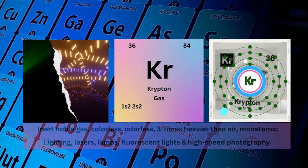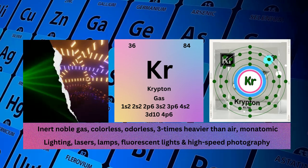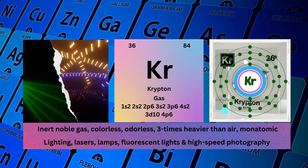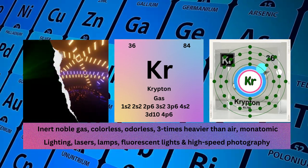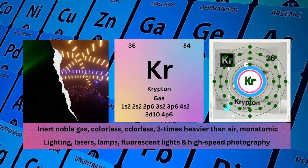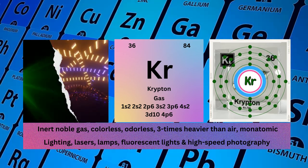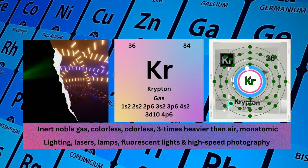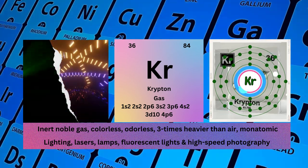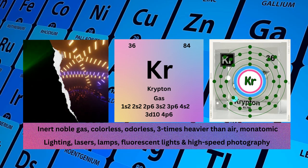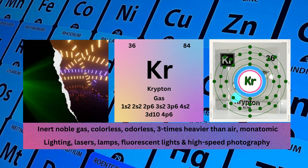Krypton. Atomic number 36. Mass number 84. Symbol BR. State gas. Electronic configuration 1s2 2s2 2p6 3s2 3p6 4s2 3d10 4p6.